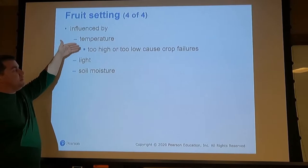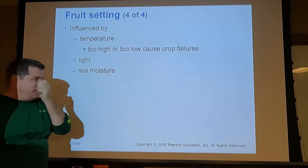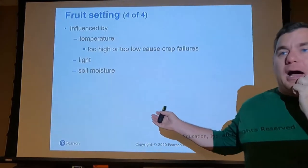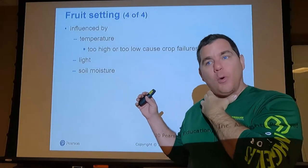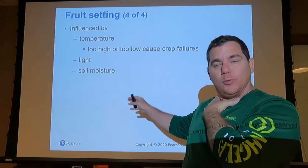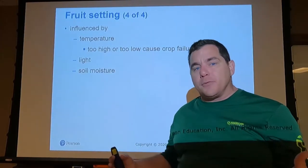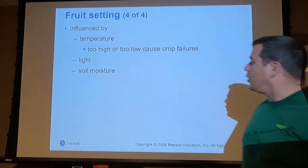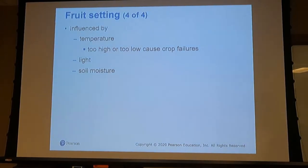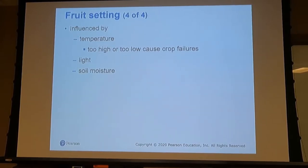Temperature extremes can cause crop failure. If temperatures go above 120°F we start to see solarization and cell deterioration, so that process won't occur. If there's not enough light, there's not enough photosynthesis to support the fruit crop. Soil moisture is also critical because the juice in fruit is a result of water taken up by the plant along with nutrients from the soil.